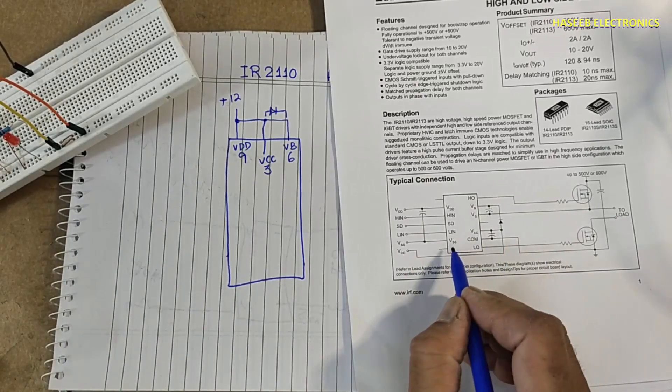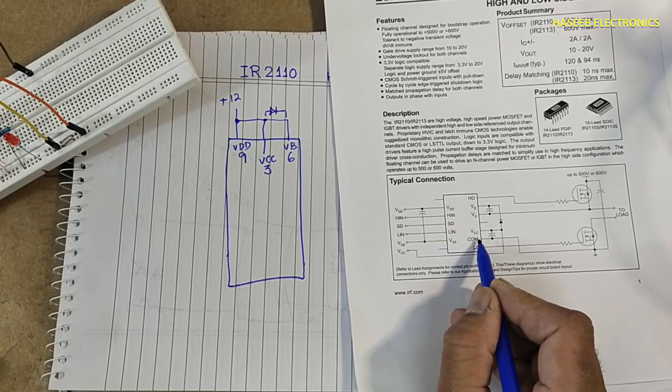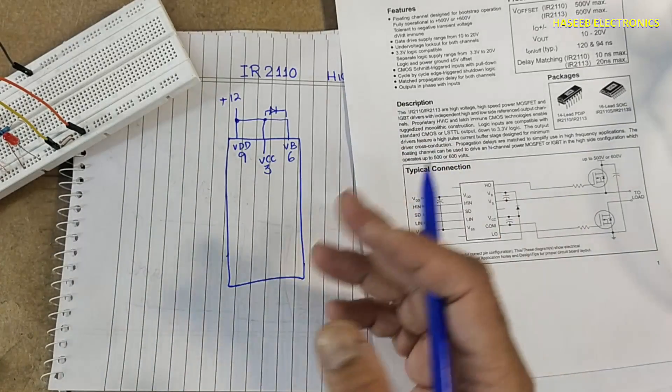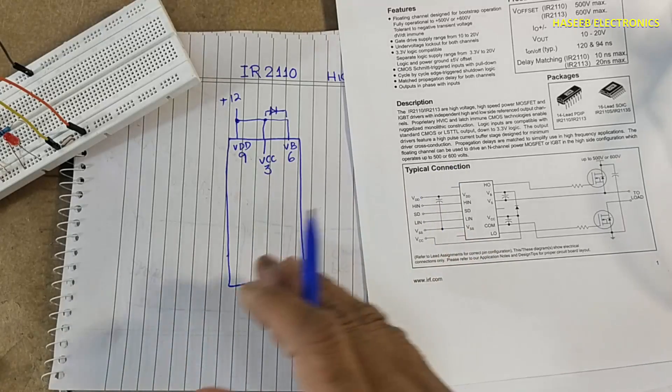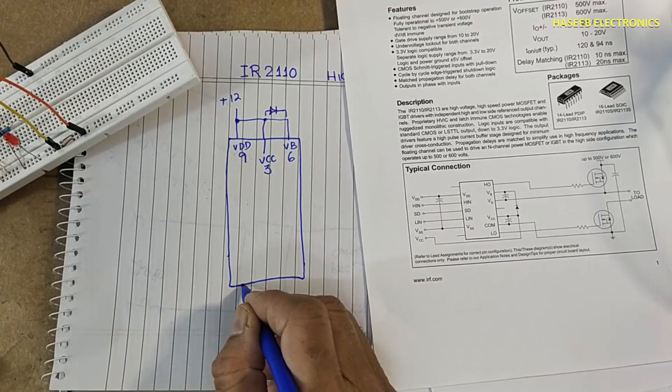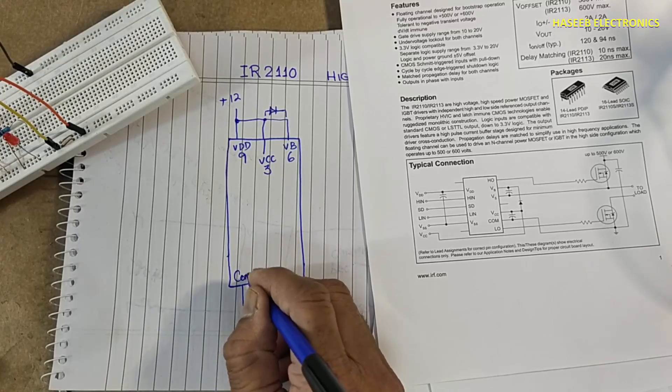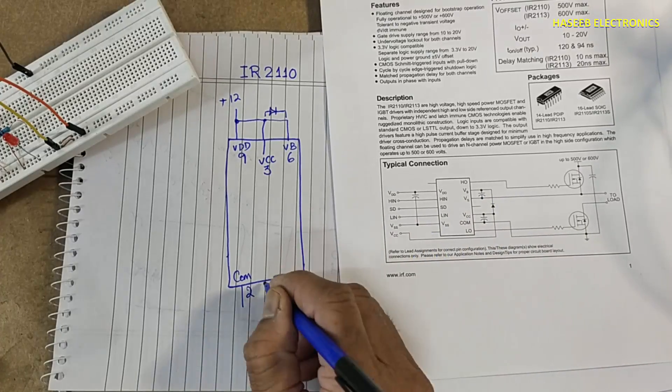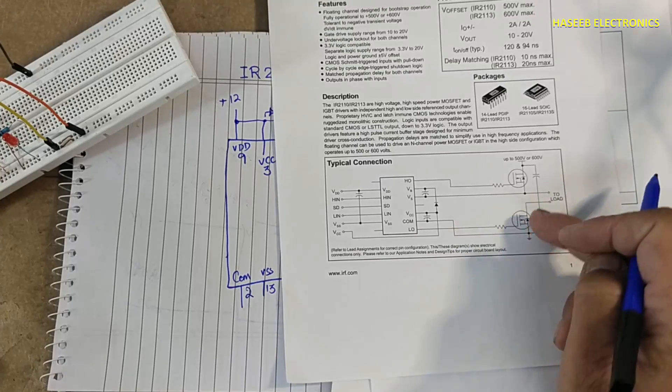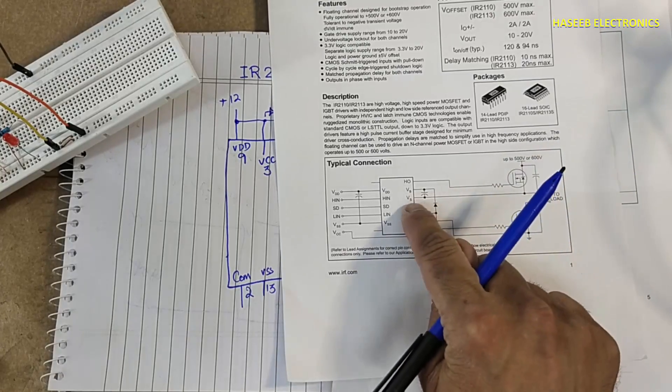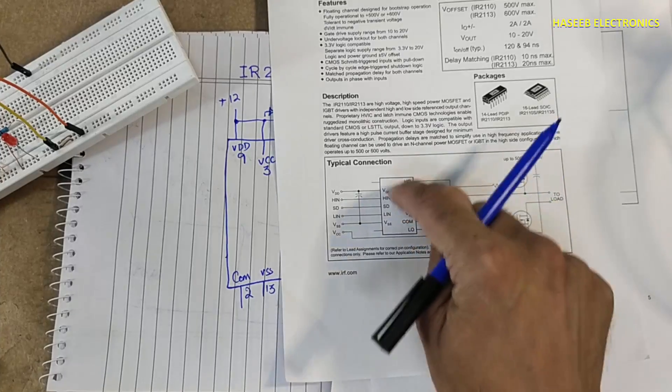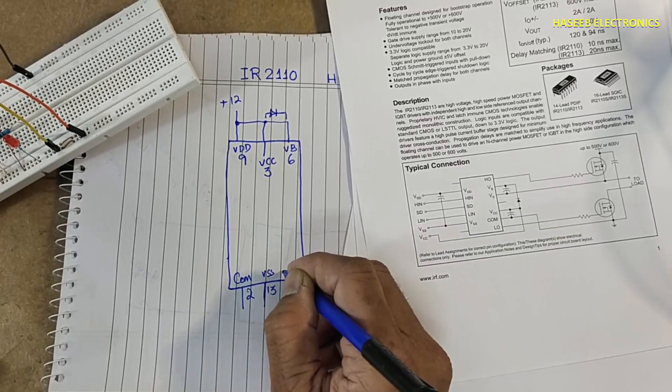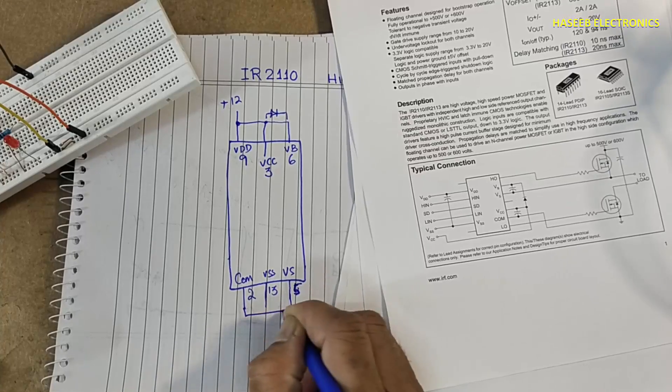Because we are using just only one power supply, in upcoming video we will make another configuration and we will use bootstrap diode, bootstrap resistor. That is pin number 2, then pin number 13 VSS. If we are using two MOSFETs, at that time pin number 5 will be source voltage for high side MOSFET driver. But now we are using same supplies, I will connect pin number 5, that is VS source voltage, to same ground pin.